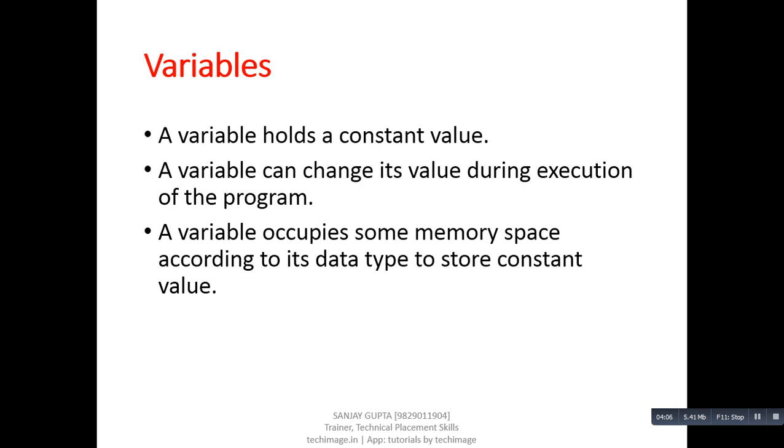Moving on, a variable occupies some memory space according to its data type to store constant value. Let's say, if we are declaring a variable of integer type, then this variable will occupy two bytes of memory. If variable is of float type, then it will occupy four bytes of memory.